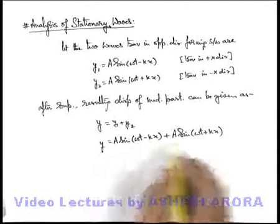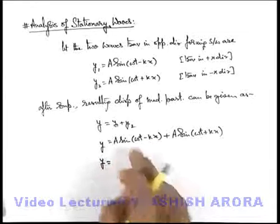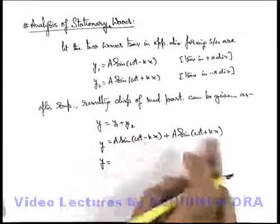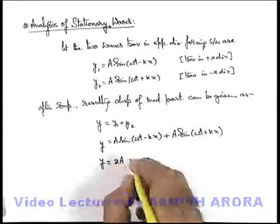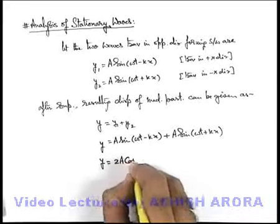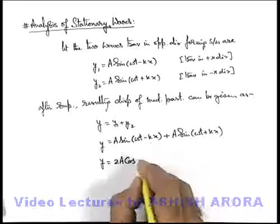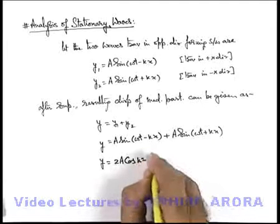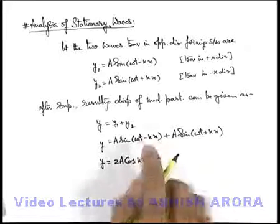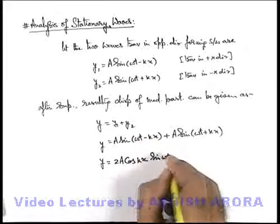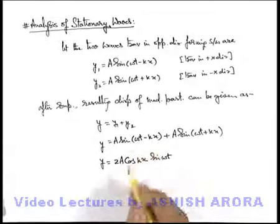Now if we open up these terms to add them, using the identity sin A + sin B = 2·cos((A−B)/2)·sin((A+B)/2), this becomes 2a·cos(kx)·sin(ωt). So this is the result we get after adding these two trigonometric terms.